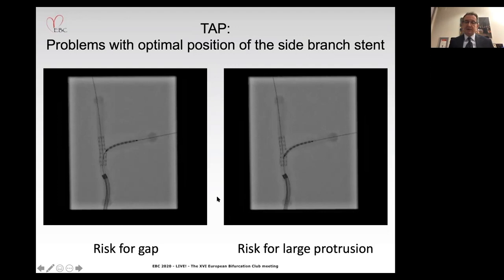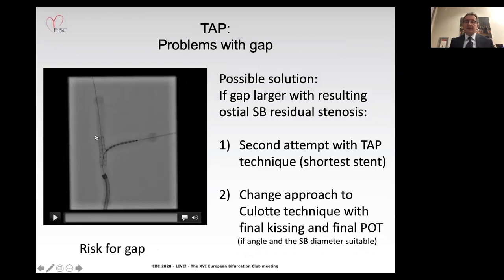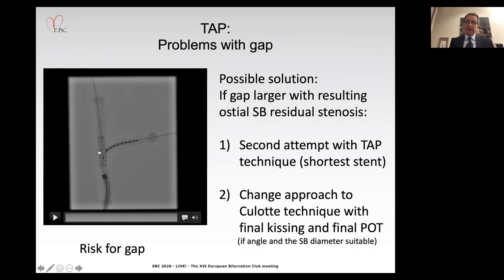How do we manage these situations? If we implant the side branch stent and have a one to one-and-a-half millimeter gap, one option is to start again with a second attempt using a shorter balloon, maybe 0.5 millimeter larger, and try again to achieve a better, suitable position. If this remains very difficult, I suggest the following approach used in our center.